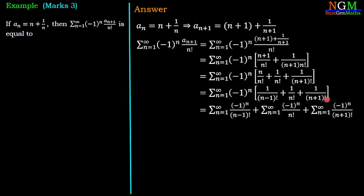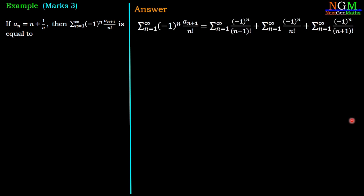Now we have three different sums: Σ (n=1 to ∞) (-1)^n/(n-1)! plus Σ (n=1 to ∞) (-1)^n/n! plus Σ (n=1 to ∞) (-1)^n/(n+1)!.